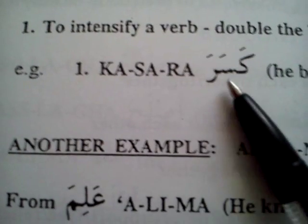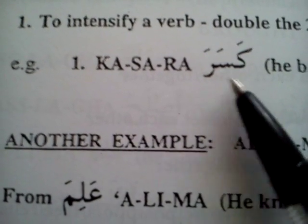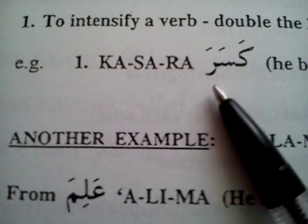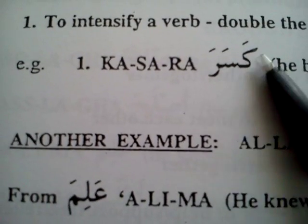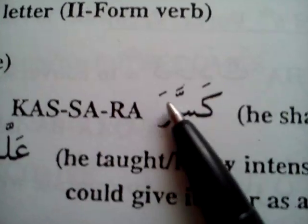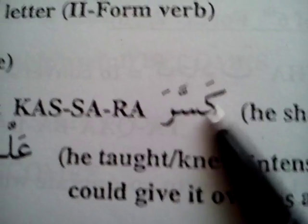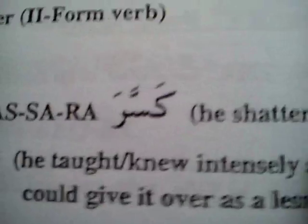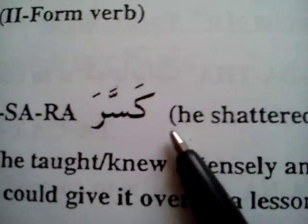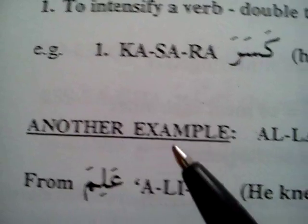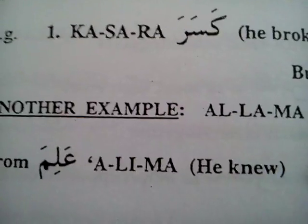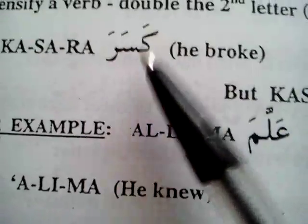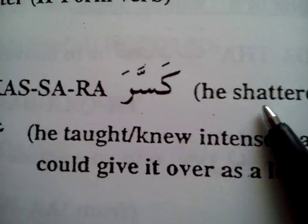Then you get different forms of the verb which give you a relationship with what's actually happening. So kasara means 'to break' or 'he broke.' But if you add a shadda there, which makes the middle one a double sound, you say kassara — then it means 'to shatter.' That's the second form of the verb, which is the intensified form. So kasara means 'to break,' but kassara means 'he shattered.'